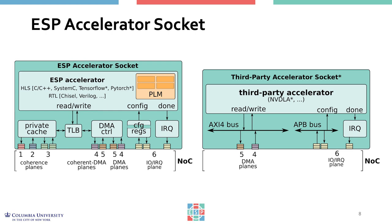When integrating a third-party accelerator like the NV DLA, some services may already come with it. The NV DLA is a fairly complex, configurable accelerator, so the ESP socket can be simplified considerably. When we released the NV DLA integration in the open source domain, it confirmed two things: first, that the socket could be simplified when certain features aren't necessary; and second, that a complex, coarse-grained, loosely coupled accelerator like NV DLA operates — in terms of programming and memory interaction — similarly to many other accelerators designed in our research group.